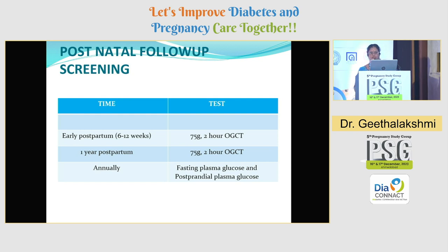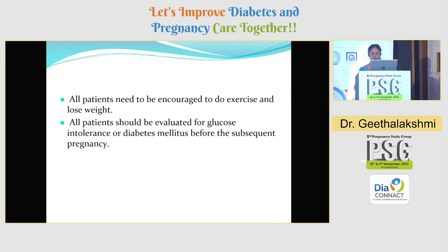For postnatal follow-up and screening, ideally we do it at 6 to 12 weeks using 75 grams OGCT with a 2-hour plasma glucose estimate. Then after 1 year, and annually with fasting and postprandial glucose. All postnatal patients should be encouraged to exercise and lose weight, and all patients should be evaluated for glucose intolerance or diabetes mellitus before a subsequent pregnancy — which is a very important point.